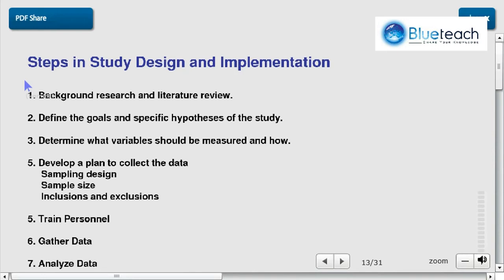So there are several steps in the design and implementation of a study. First what we need to do is to make a background research and literature review. This is an important step because this gives you perspective on what data is useful, what is not, and what previous research has been done and how they were able to analyze the data and whether they could draw conclusions or not.